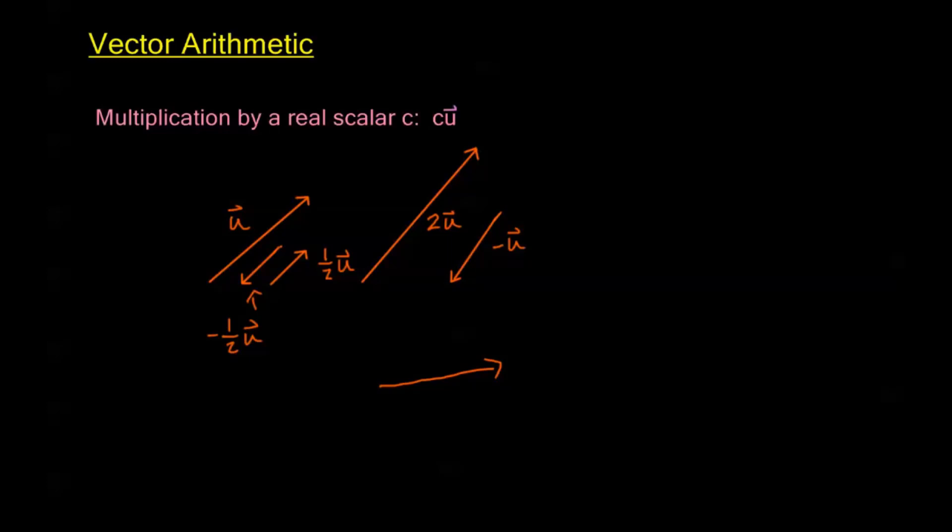Alright, now in the next video, we're going to look at writing these vectors in a component form based on breaking down their magnitude and direction into what we call components. And with that, we're going to be able to take these different arithmetics and actually do them out on paper when we're given particular vectors. We'll see you in the next video.